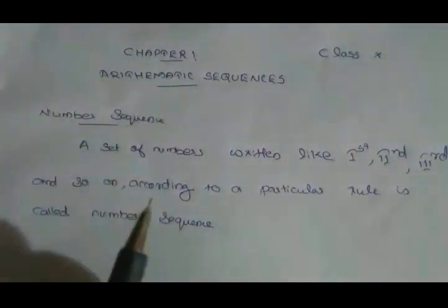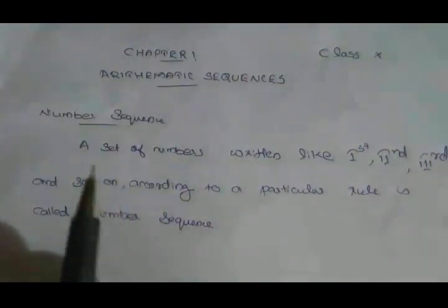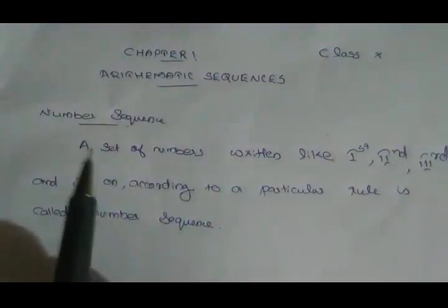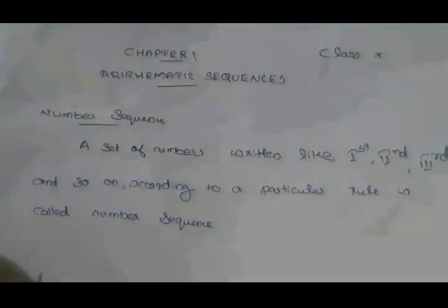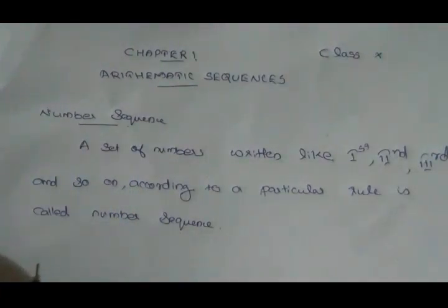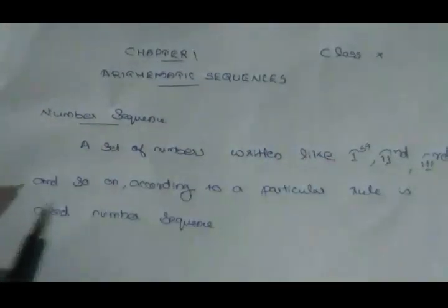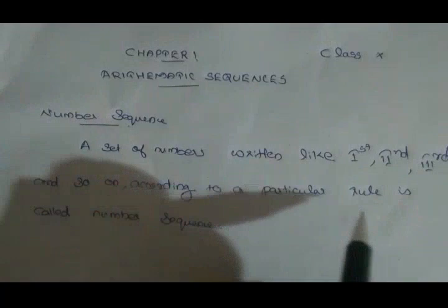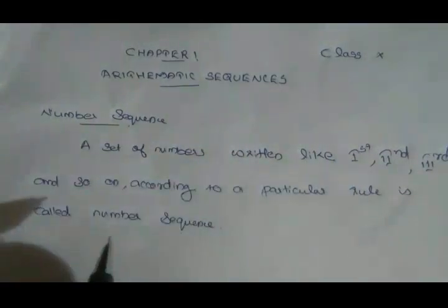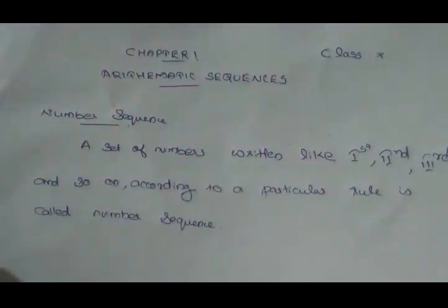Let's start with the number sequence. What is a number sequence? A set of numbers written as 1st, 2nd, 3rd and so on, according to a particular rule, is called a number sequence.